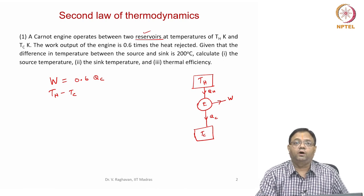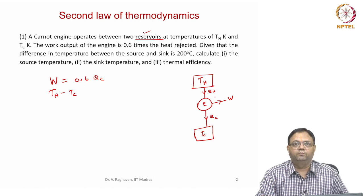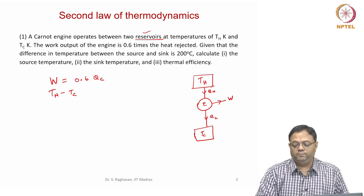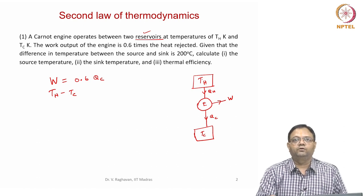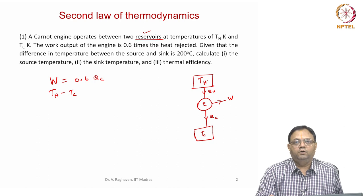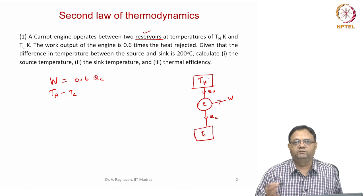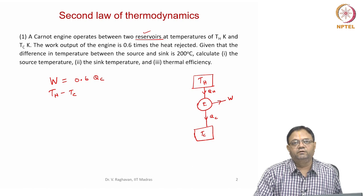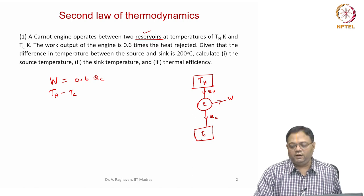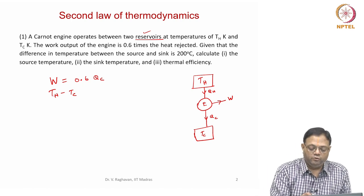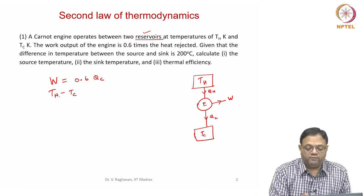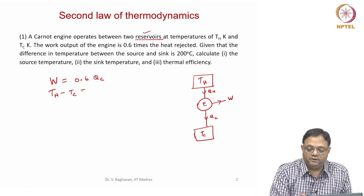A reservoir has huge mass or thermal capacity — we can say MC will be very large. For example, a furnace where continuous burning of fuel and air takes place will be always at a very high temperature, say 1500 Kelvin. Similarly, the ambient at say 300 Kelvin will be the reservoir at lower temperature. The temperature difference between the two reservoirs, TH minus TC, is given as 200 degrees centigrade.